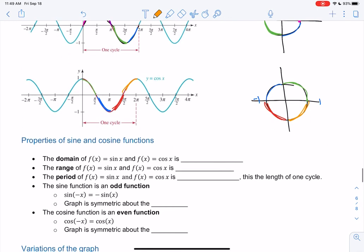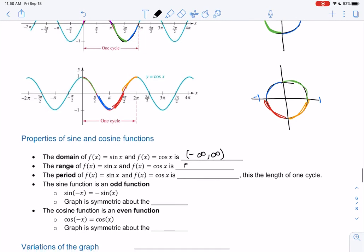So domain for sine x and cosine x is negative infinity to infinity. Any number is allowed to be plugged in. We can plug in angles as big as infinity, the angles just keep going. But the range is negative 1 to 1, those are the biggest numbers we get. Negative 1 to 1, the y values.